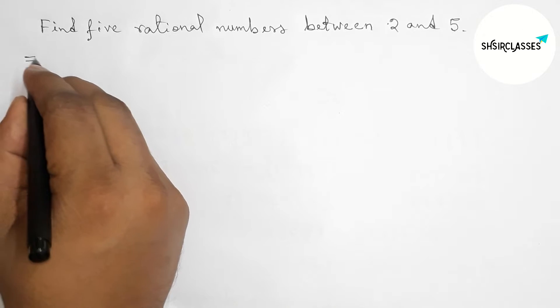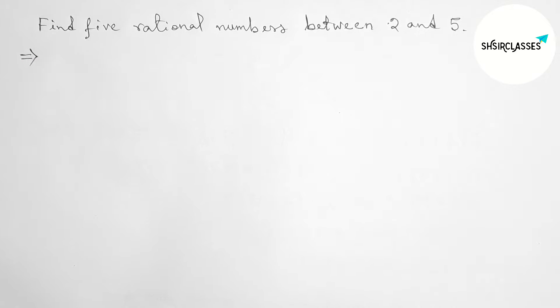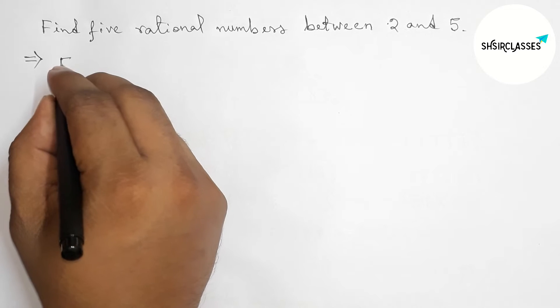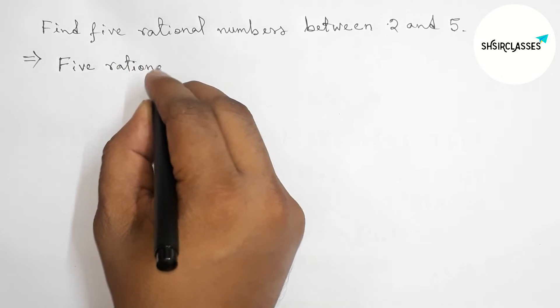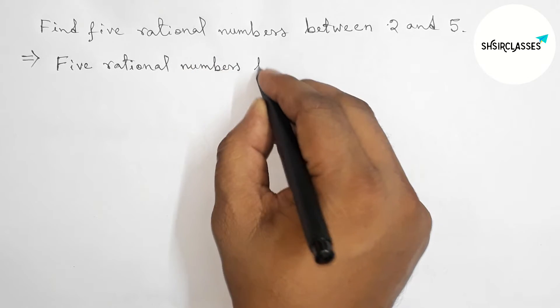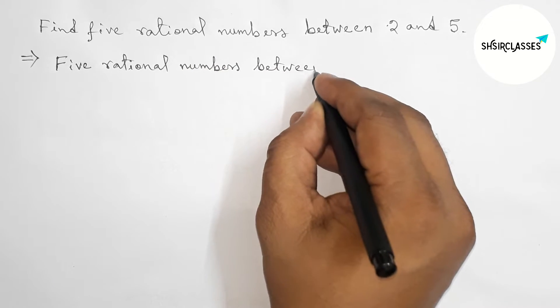First of all, let us solve this problem. Here we have to find 5 rational numbers between 2 and 5. We know that between 2 and 5 there are infinite rational numbers.